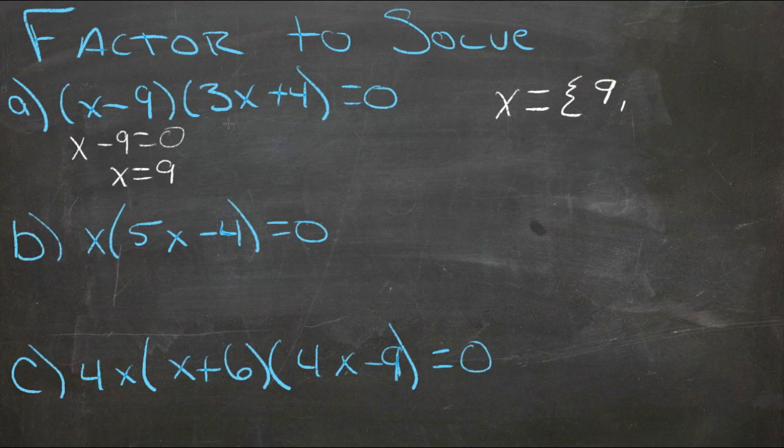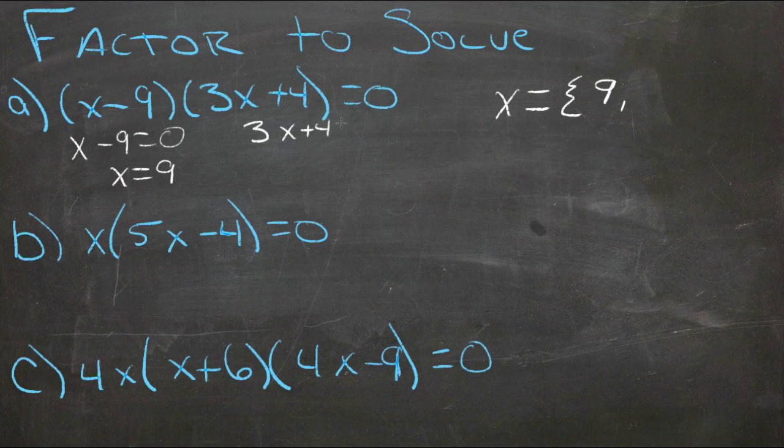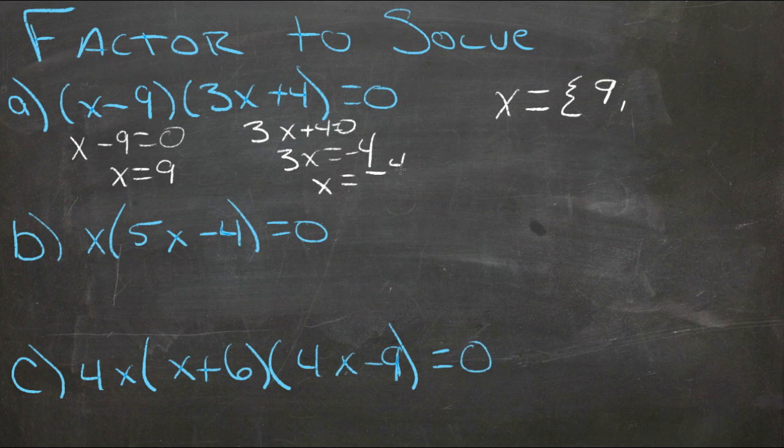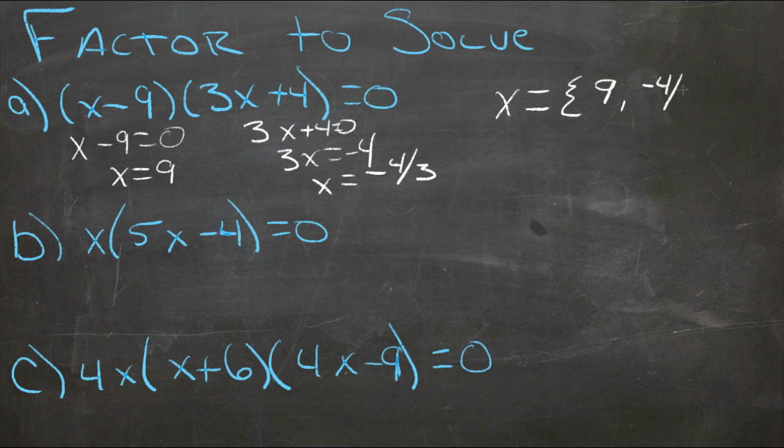The other solution would be 3x plus 4 equals zero. So we add negative 4 to both sides. 3x equals negative 4. Divide both sides by 3, and we get x equals negative 4 thirds. So the other solution, then, is negative 4 thirds.